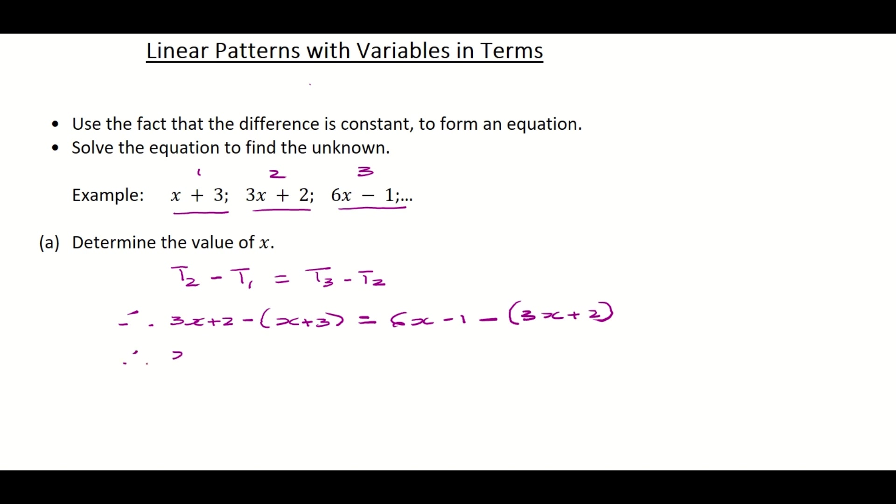Therefore, 3x plus 2 minus x minus 3 is equal to 6x minus 1 minus 3x minus 2. Then you gather like terms. 3x minus x is 2x, positive 2 negative 3 is negative 1, is equal to 6x minus 3x is 3x, negative 1 negative 2 is negative 3.